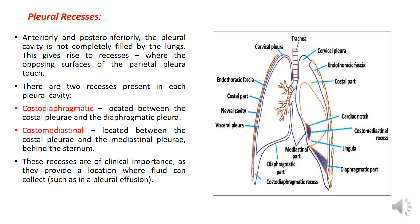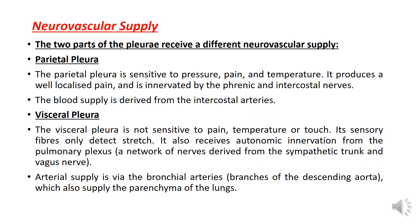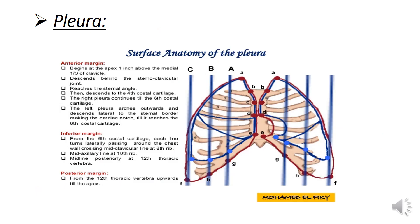The recesses are of clinical importance as they provide sites where fluids can collect, such as in pleural effusion. Regarding neurovascular supply, the two parts of pleura receive different neurovascular supply. The parietal pleura is sensitive to temperature, pain, and pressure and is innervated by the phrenic and intercostal nerves; its blood supply is derived from the intercostal arteries. The visceral pleura is not sensitive to pain but is sensitive to stretch; it receives autonomic innervation from the pulmonary plexus and blood supply from the bronchial arteries, which also supply the lung parenchyma.